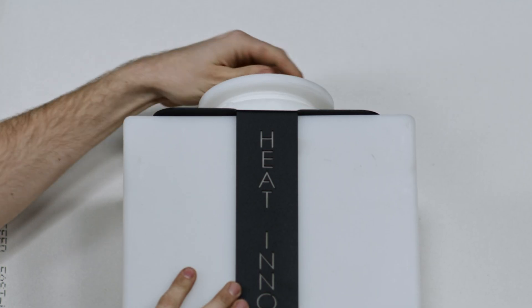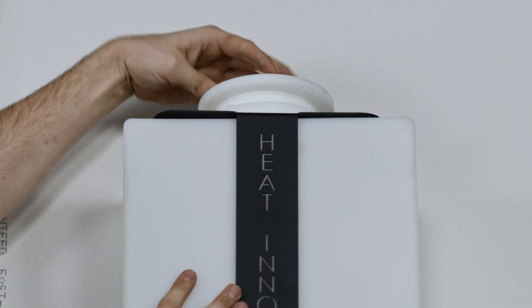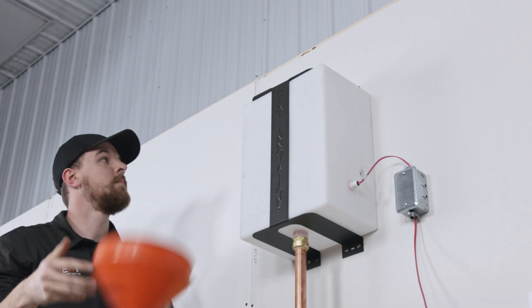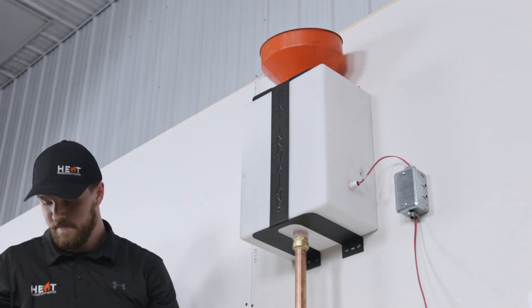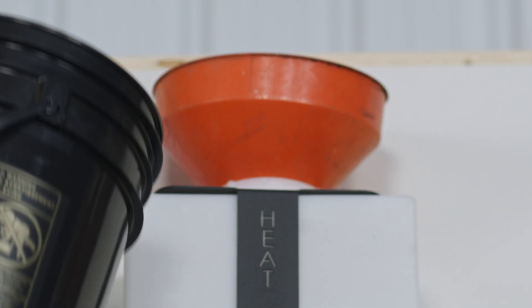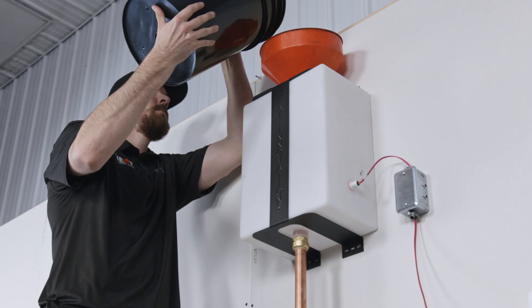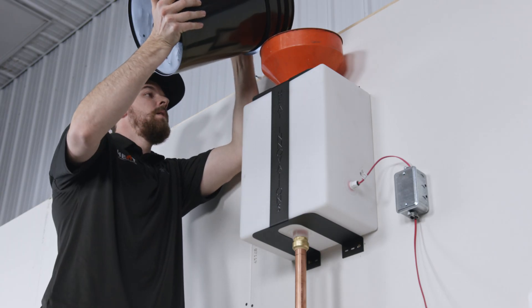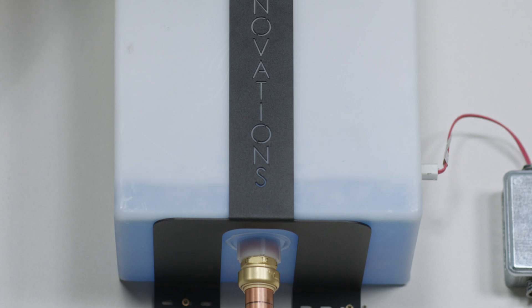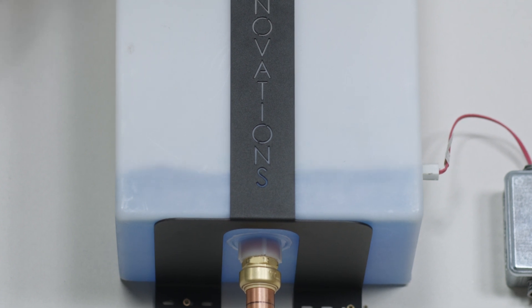Remove the lid on the expansion tank. With a funnel, fill the system with water and glycol mix through the expansion tank. We suggest a 30 to 35 percent glycol water mixture for most systems.